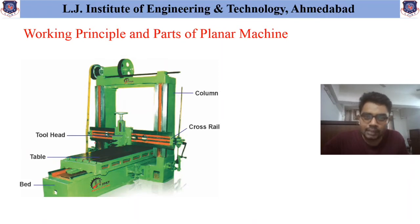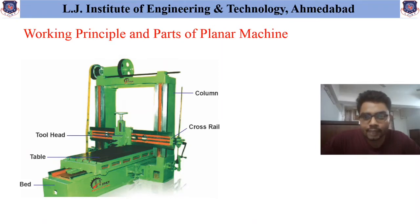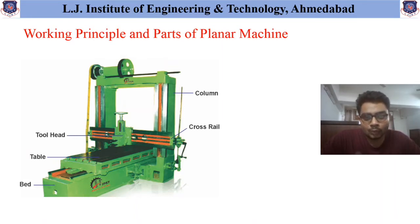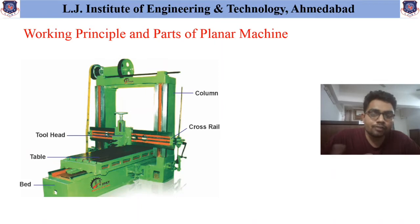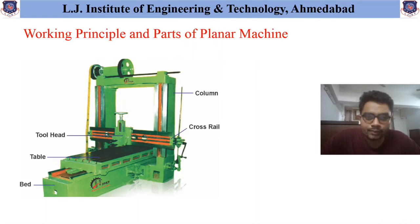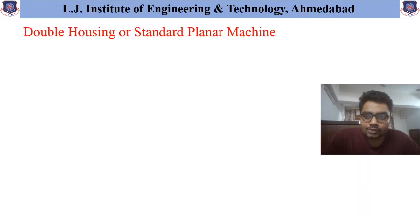If the length of the workpiece is very large, a different type of Planner Machine is used. Similarly, if the height requirement is very high, another Planner Machine is used. If one wants to machine multiple surfaces, yet another type of Planner Machine can be used. So based on the requirement and finishing needed on different surfaces, different types of Planner Machines are used. The first one is the double housing or standard Planner Machine.